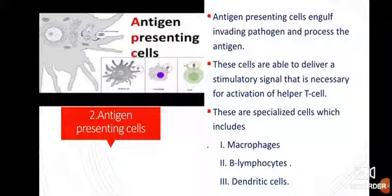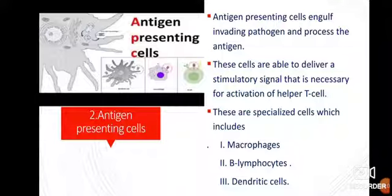In summary, in this video we studied the cells that function in acquired immunity. There are two types: lymphocytes — further divided into B lymphocytes and T lymphocytes — and antigen-presenting cells, which include macrophages, B-lymphocytes, and dendritic cells.